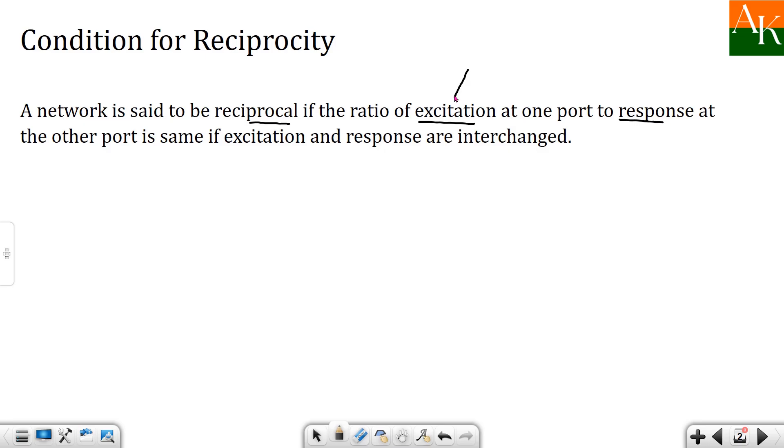First, you should know what we mean by excitation. Generally, excitation means application of a voltage, and response is generally measured in terms of current. So you have to apply voltage at one port, calculate the current at the other port, and take the ratio.